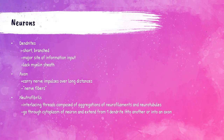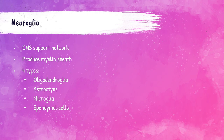Dendrites are short branched processes in the neuron that serve as the site for information input; they do not have a myelin sheath. Axons, or nerve fibers, carry nerve impulses over long distances, and each neuron has a single axon that terminates in the dendrite. Neurofibrils are interlacing threads composed of aggregations of neurofilaments and neurotubules that go throughout the neuron cytoplasm and extend from one dendrite into another or into an axon.